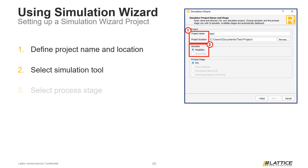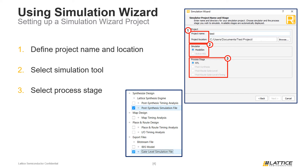Finally, users should select the process stage they want to simulate their project at. RTL will always be selectable, however the other three options require additional configuration. For the Post-Synthesis Process Stage option to be available, users will need to enable the Post-Synthesis Simulation File option in Radiant's Task Detail view and run Synthesis. For the Post-Route Gate Level and Post-Route Gate Level Timing options, users will need to enable the Gate Level Simulation File option in the Task Detail view and run the Export Files part of the process flow. Once all settings are configured, click Next to continue.